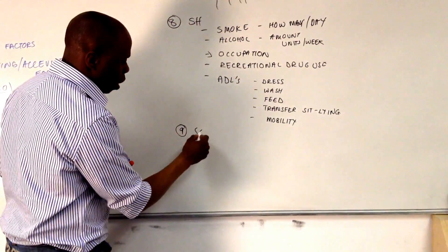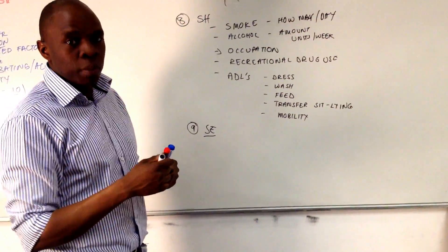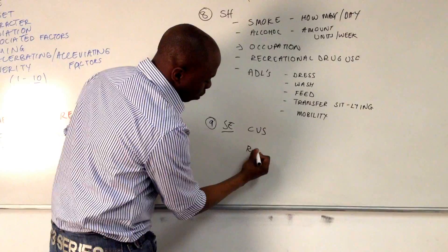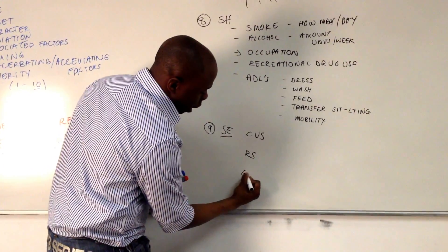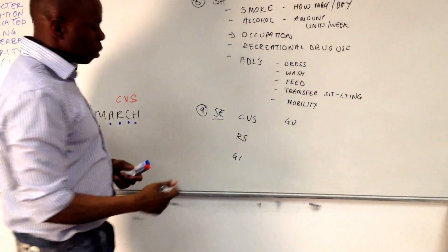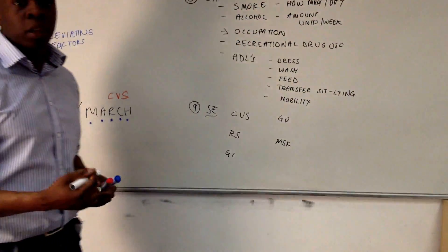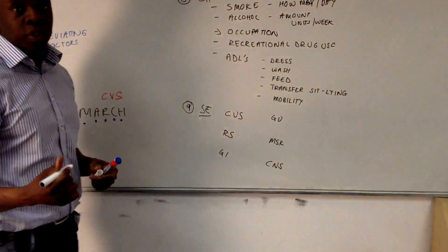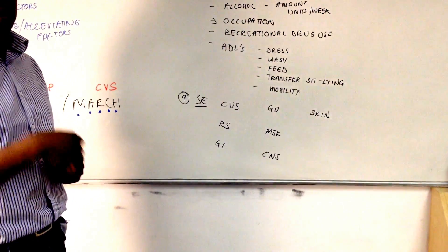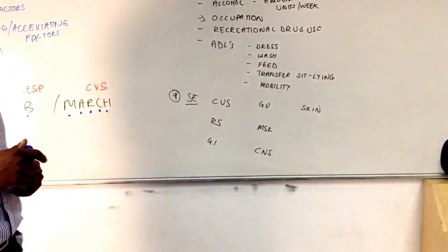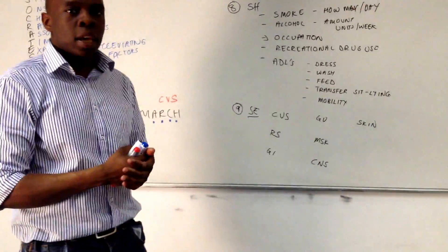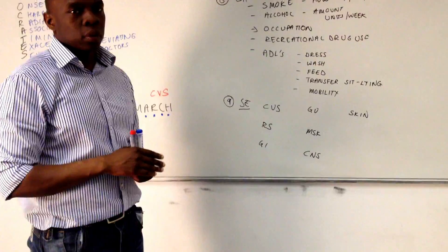We're on to systemic inquiry. We're talking about all the major body systems: CVS — cardiovascular, the respiratory system, GI — gastrointestinal, GU — genitourinary, MSK — musculoskeletal system, CNS — the nervous system, and don't forget the largest organ in the whole body is your integument — your skin, your covering. We need to ask direct questions for all of these to do a final sweep and find out if there's anything else going on.